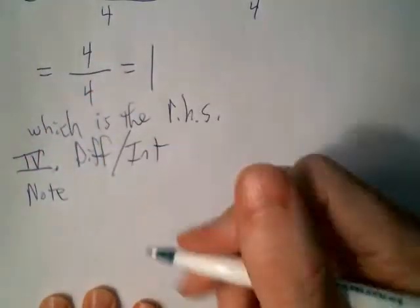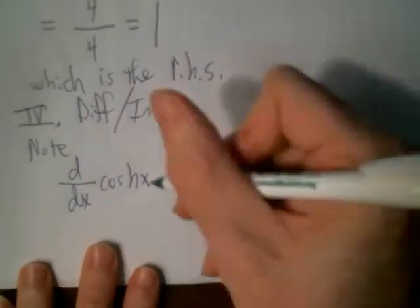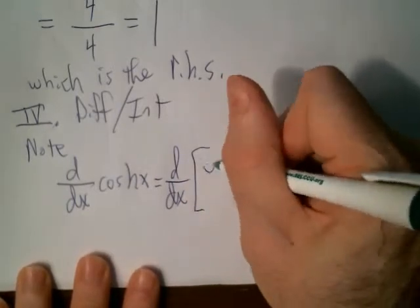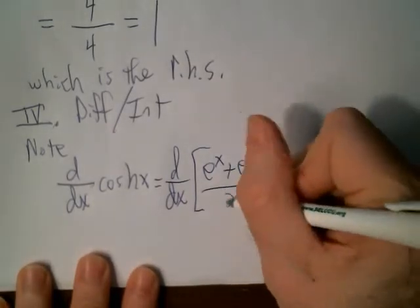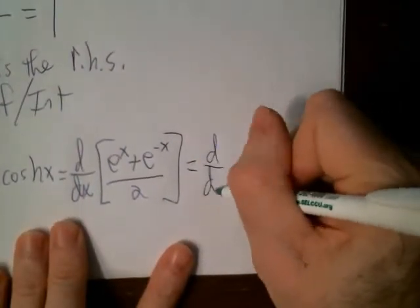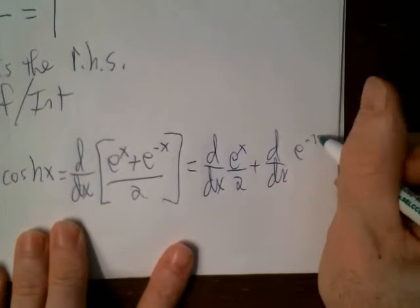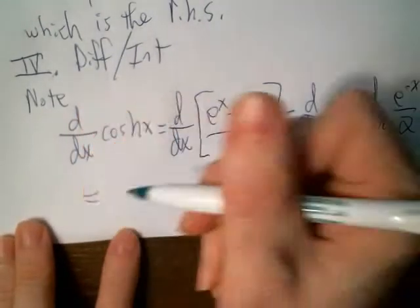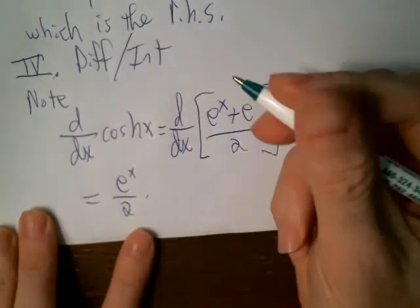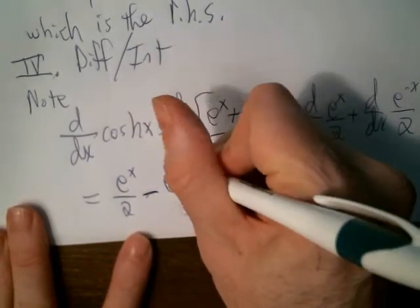Recall that the derivative of cosine was negative sine. For cosh: cosh is (e^x + e^(-x))/2. The derivative of that sum is the sum of the derivatives: derivative of e^x/2 is e^x/2, and derivative of e^(-x)/2 is negative e^(-x)/2 by the chain rule. Rewriting with a common denominator gives (e^x - e^(-x))/2, which is just sinh.